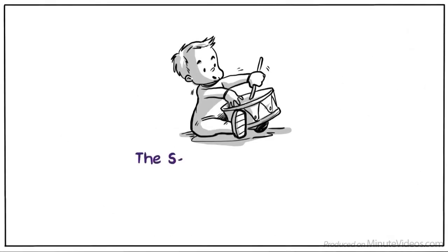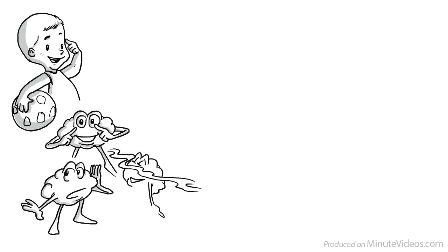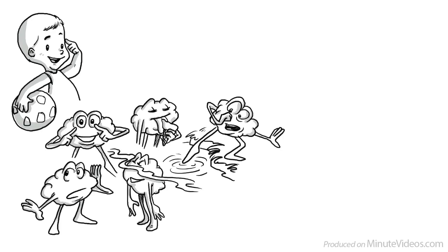One, the sensory motor stage, ages birth to two. In the sensory motor stage, we develop through experiences and movement our five senses. Our brain wants to see, hear, smell, taste and touch as much as possible.